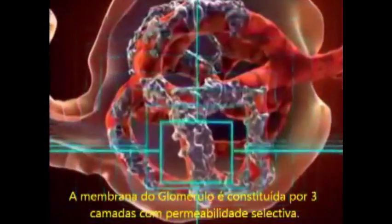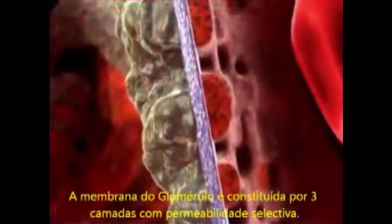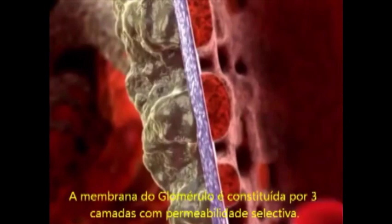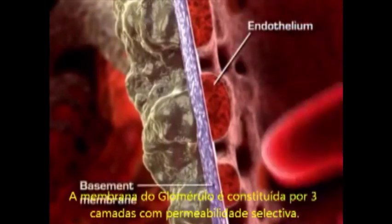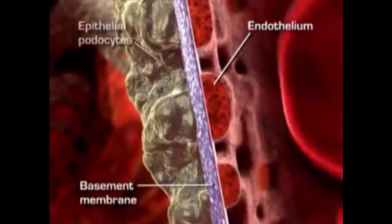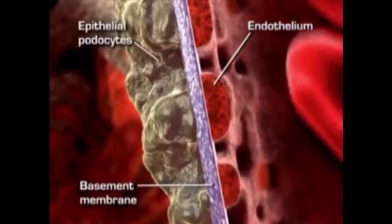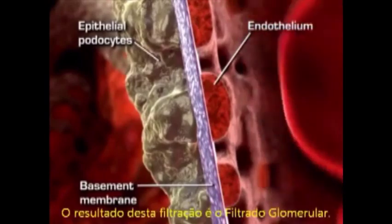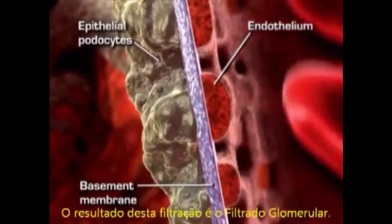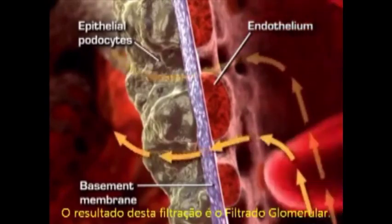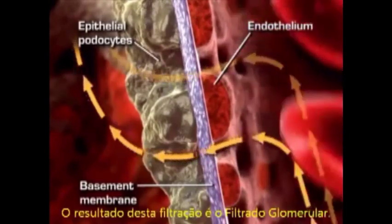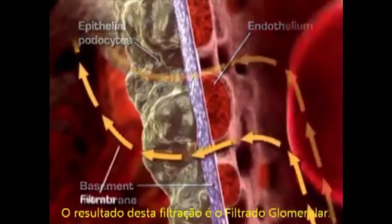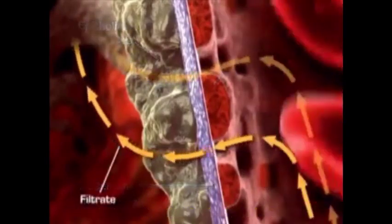Plasma-like fluid is filtered from the capillary blood into Bowman's space through the glomerular filtration membrane. The glomerular filtration membrane consists of three layers of capillary wall: the endothelium, the basement membrane, and the epithelium. This membrane allows some particles from the blood to pass through, but not all. The fluid that is filtered from the capillary blood into Bowman's space is called filtrate and forms the primary urine.